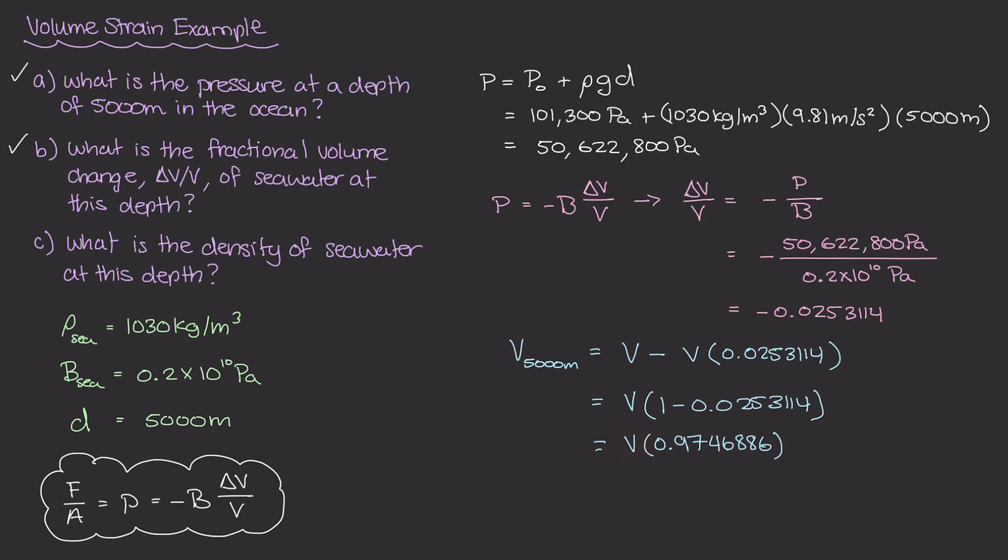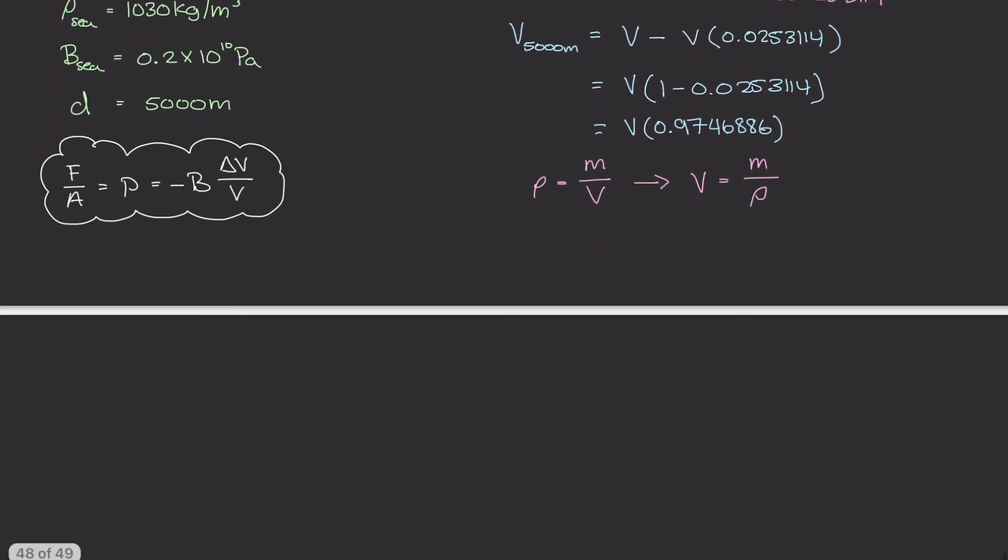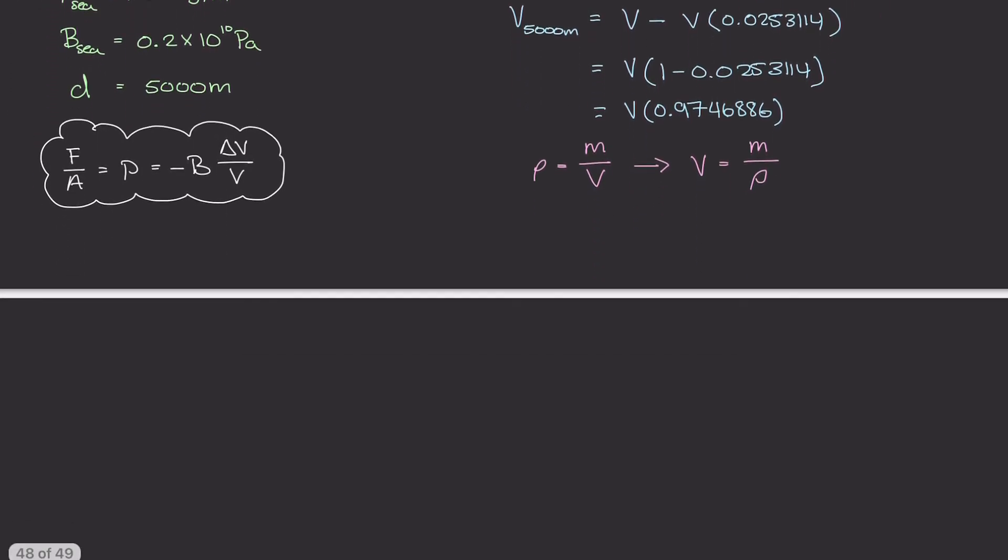So again, part C of this question is asking what is the density of seawater at this level. What do we know about mass density? Well, mass density is equal to mass over volume. Now if I rewrite this relationship, I can get volume is equal to mass divided by mass density. And what I can do now is scroll down a tiny bit because I'm running out of room. And I can take this term that we found for volume and plug it into this equation right here. So let's go ahead and do that.